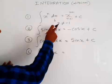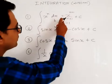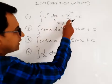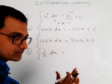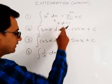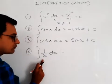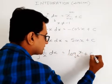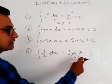So here, compulsory n equals minus 1. If we do the integration of 1 upon x this way, its integration is log x base e plus c. So: integration of 1 upon x dx equals log x base e plus c.